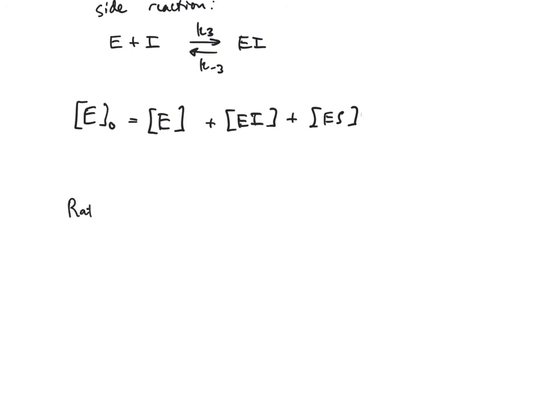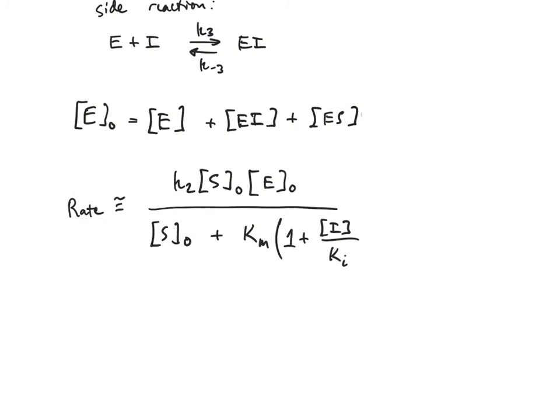So our rate is now going to look like this. And by the way, this is approximately equal to K2, starting concentration of substrate, starting concentration of enzyme. So far, it looks very similar, although now we're going to not just have that Michaelis constant by itself, but we're going to have to add this extra term related to the concentration of the inhibitor and the equilibrium constant of the inhibitor.